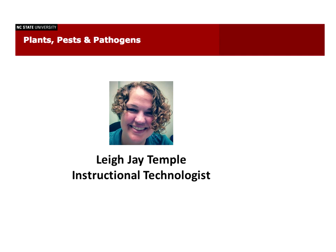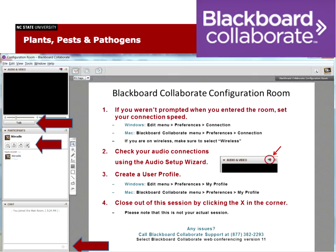Good morning, everyone. My name is Lee Jay, and I just wanted to give you an overview of the Blackboard Collaborate session you're in, in case this is your first time joining us. On the left side of the screen, you'll notice a talk button — only press that if you've raised your hand first and want to ask a question. Make sure that if you're not talking, you have that unselected. If you need to type something or ask a question, you can type it in the chat window.